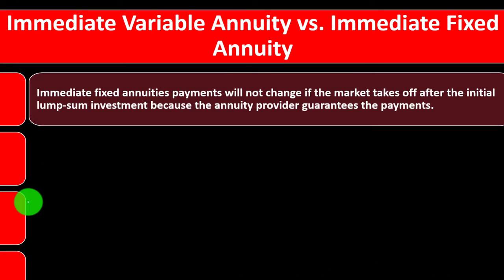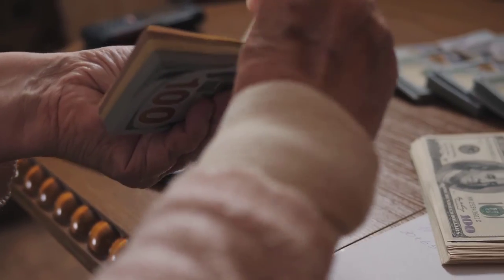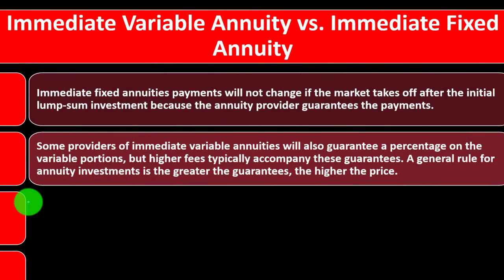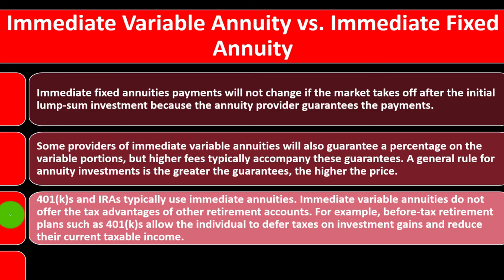Immediate fixed annuity payments will not change if the market takes off after the initial lump sum investment, because the annuity provider guarantees the payments — the payment is locked in up front. Some providers of immediate variable annuities will also guarantee a percentage on the variable portion, but higher fees typically accompany these guarantees. A general rule for annuity investments: the greater the guarantees, the higher the price.